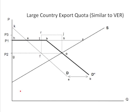Here's a depiction of a large country export quota. This is similar to a voluntary export restraint discussed on the import side, but from the standpoint of the exporting country. The original price is P1, domestic consumption is the distance HA, domestic production is HC, and the difference AEC is the original amount of exports. Then a quota is imposed equal to the distance between A and B — an export quota less than what firms can sell in free trade.